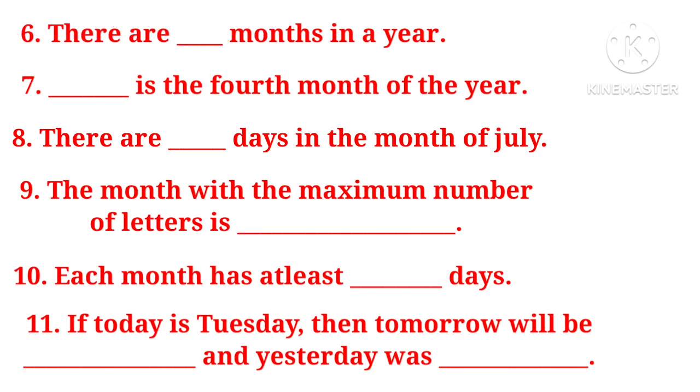Next, there are dash months in a year. There are 12 months in a year. Dash is the 4th month of the year. Which is the 4th month? January, February, March, April. So April is the 4th month.